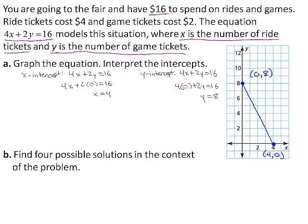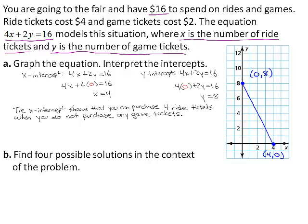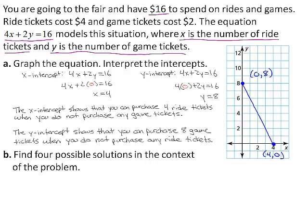Because x is 4, the x-intercept shows that you can purchase 4 ride tickets when you do not purchase any game tickets. Because the y-intercept is 8, the y-intercept shows that you can purchase 8 game tickets when you do not purchase any ride tickets.